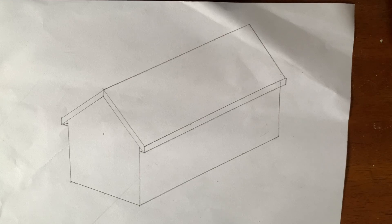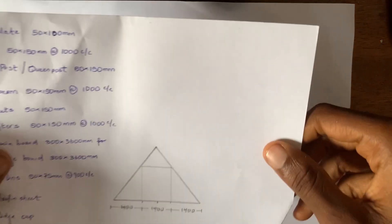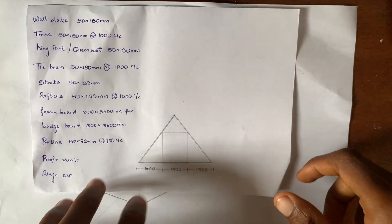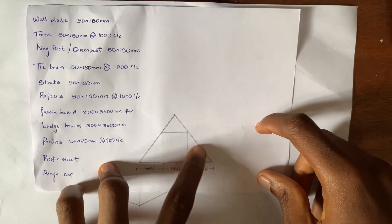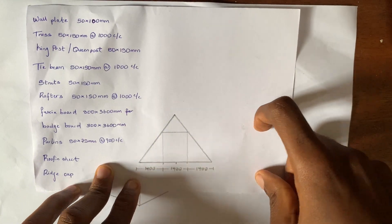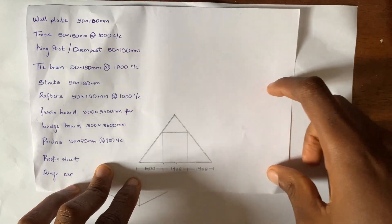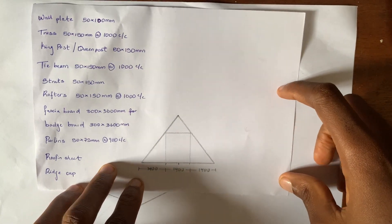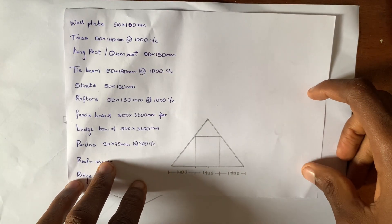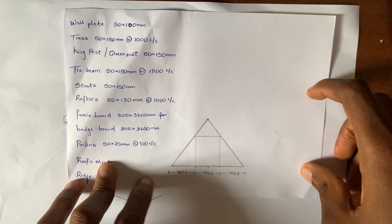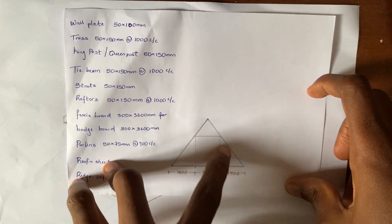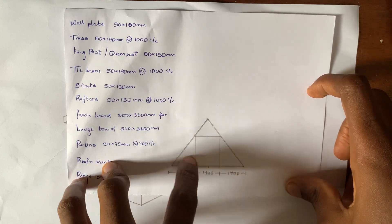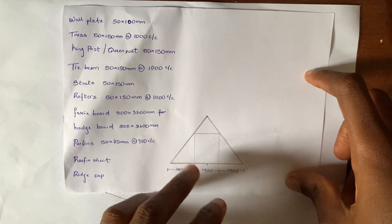In this video we're going to be taking a different route by having a different truss design. In this design we are not going to be using a king post; instead we are going to be using a queen post. This is the design of the truss that we're going to be using.